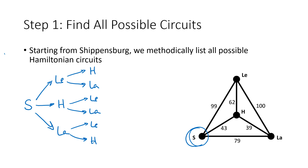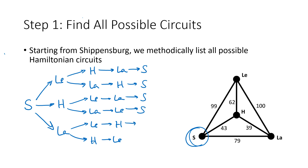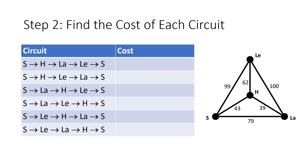Going back to the top branch: if we went Shippensburg to Lewisburg to Harrisburg, we only have one choice — Lancaster. If we went to Lancaster second from Lewisburg, we'd only be able to go to Harrisburg. Similarly, the remaining branches each have one forced third stop. No matter which branch we followed, the very last step is to return to Shippensburg. I've now taken all those circuits from the tree diagram and written them in a table.